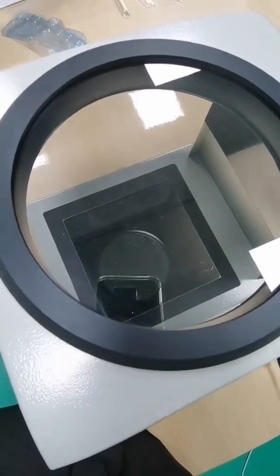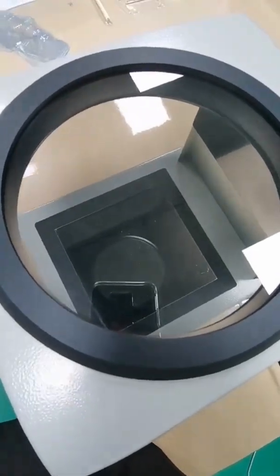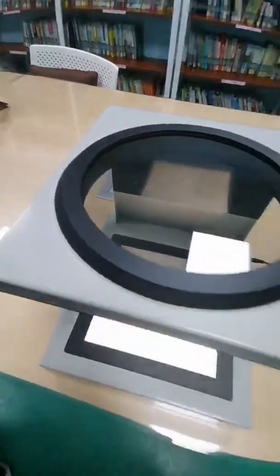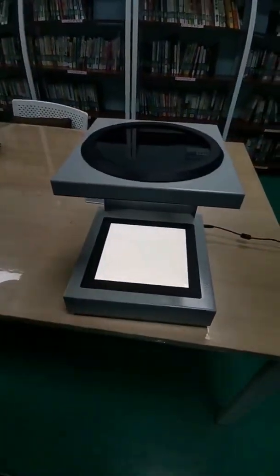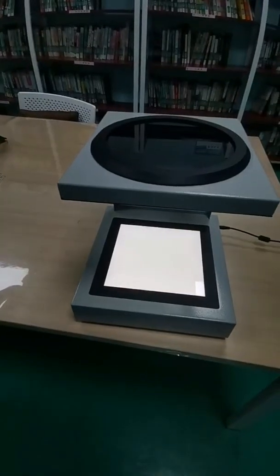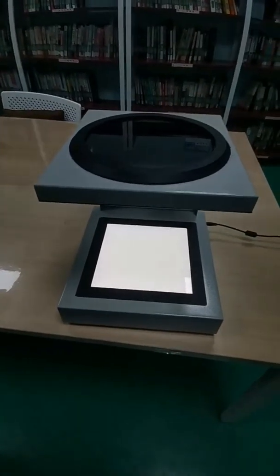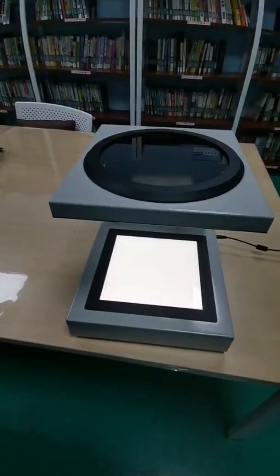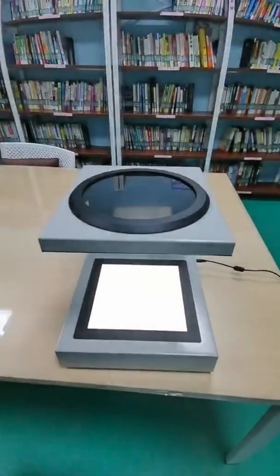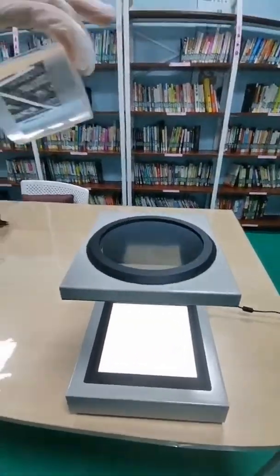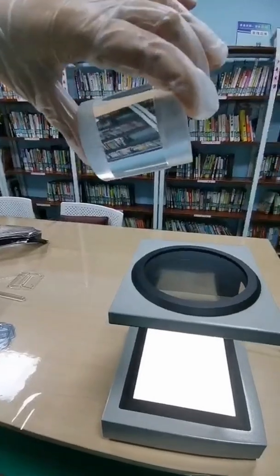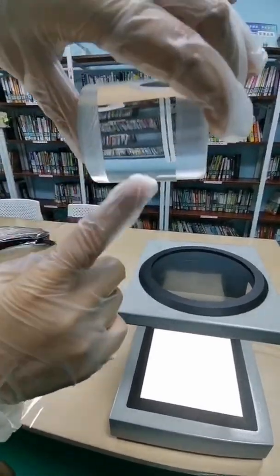In the end, we will have another experiment. The research is about the effect of different transparency on our polariscope testing performance. Now I'm holding an acrylic sample. This surface is completely transparent and this one is not transparent. Now let's see them within our polariscope.